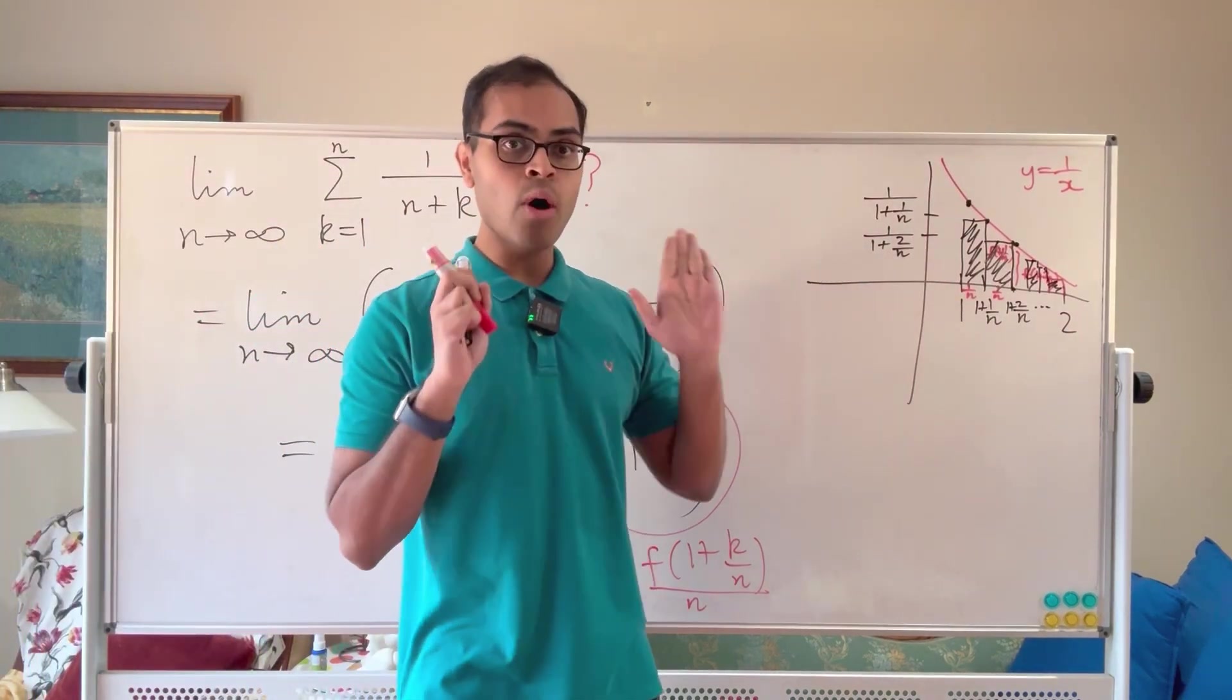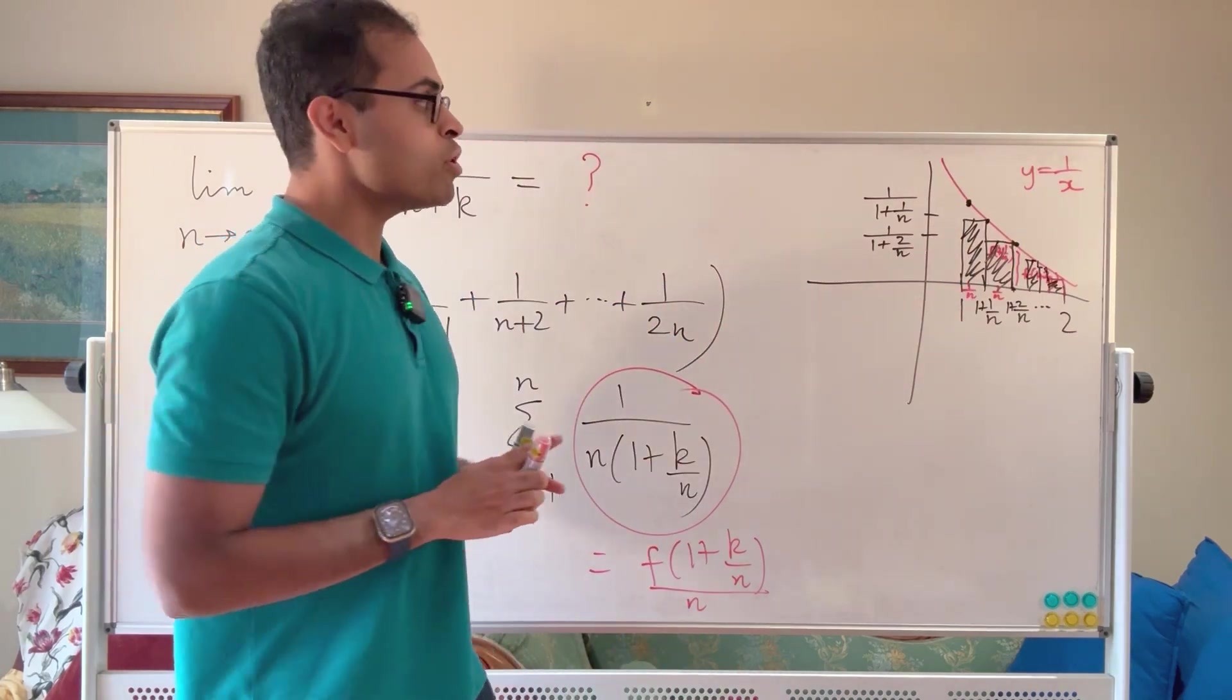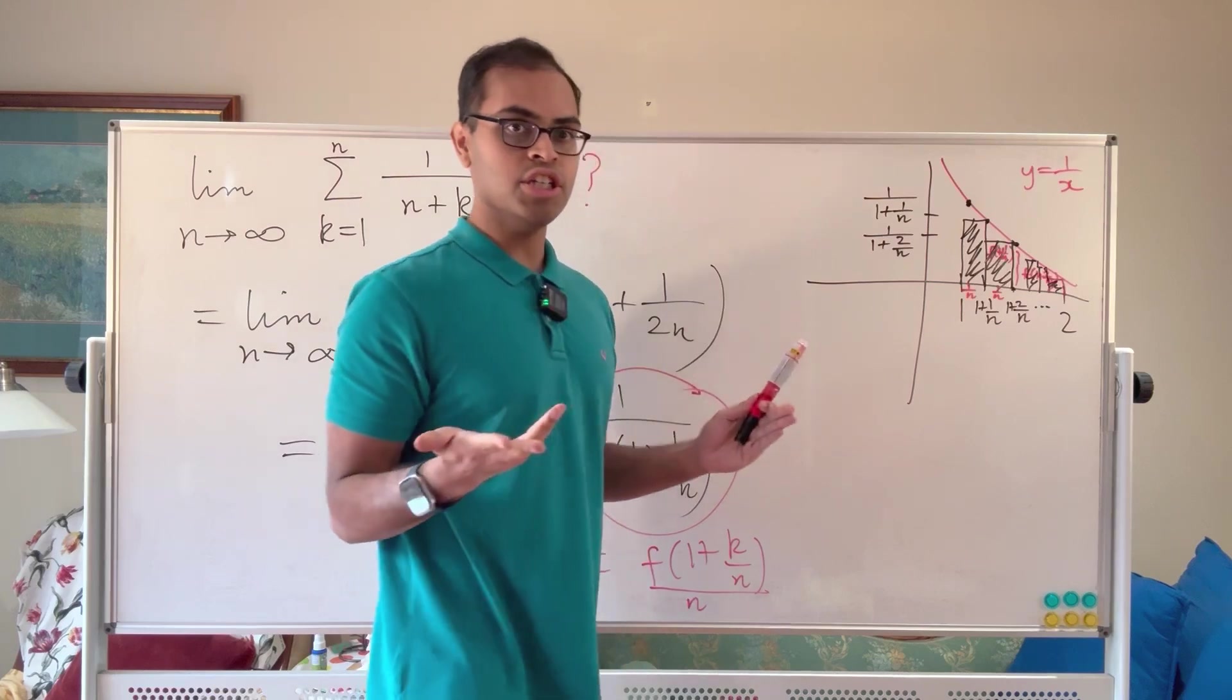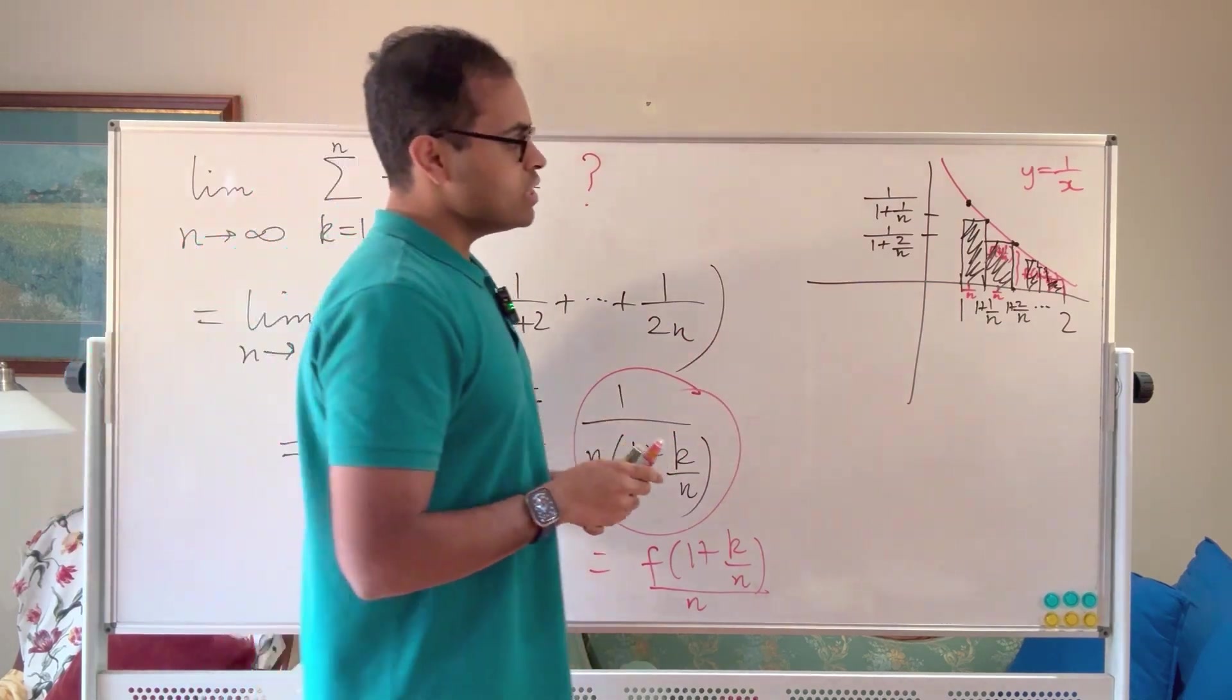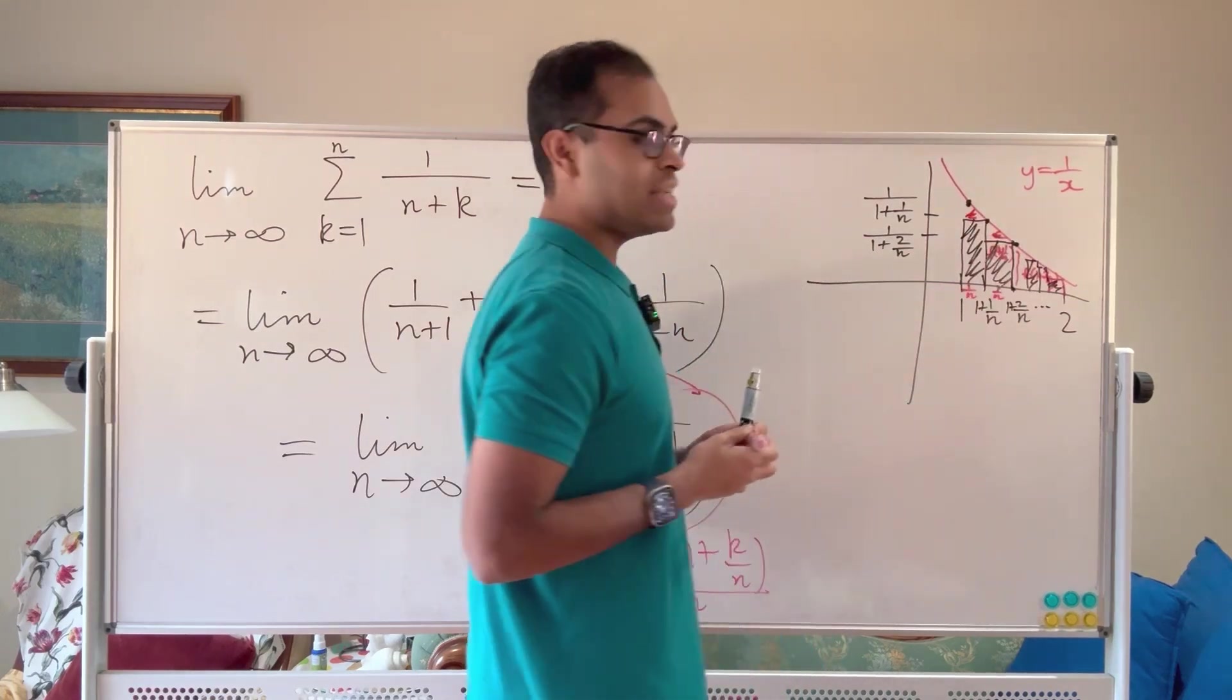Now as n gets bigger and bigger, these rectangles get thinner and thinner. It's going to approach the area under the graph of this function, y equals 1 over x from 1 to 2. Right, so in this case, you know, you sort of see, okay, there's this excess area which you're not taking care of.